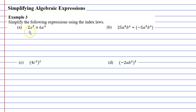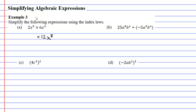Starting with question A, we're going to multiply the 2 and the 6. 2 times 6 will give us 12. Next we can see that we're multiplying x to the power of 5 by x to the power of 3. It's important to note that our bases are the same — they're both x — which means that we're allowed to add the powers. When you multiply, you add the powers. So we write our base as x and then 5 plus 3 gives us 8. So we get 12 times x to the power of 8.